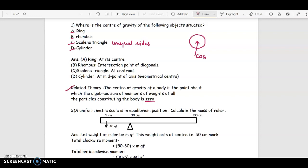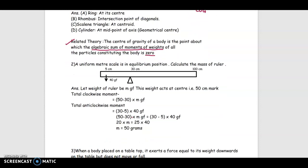Now related theory: the center of gravity of a body is the point about which the algebraic sum of moments of weight of all the particles constituting the body is zero. This is a very important statement.